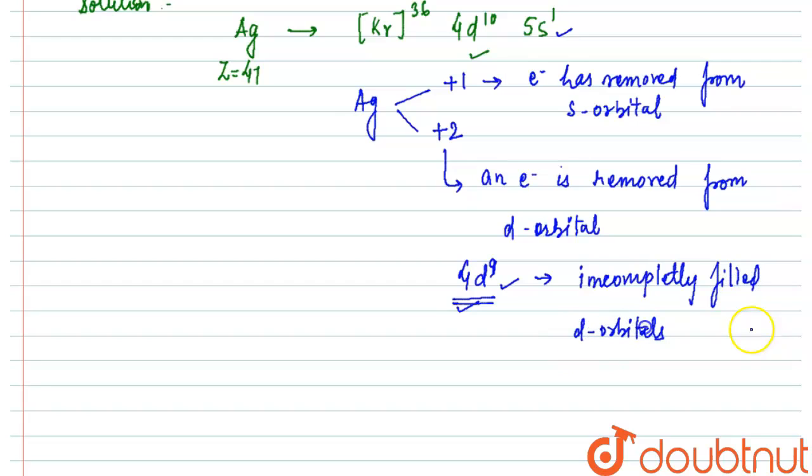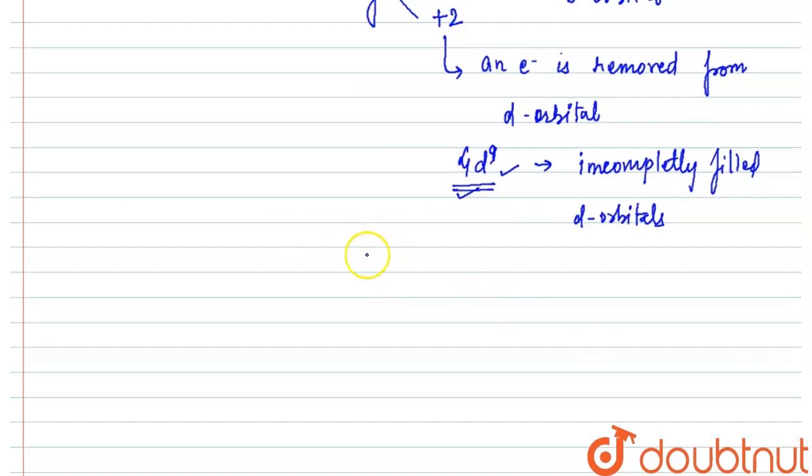So now we can say that silver is our transition element. Hence, I can say silver is a transition element.